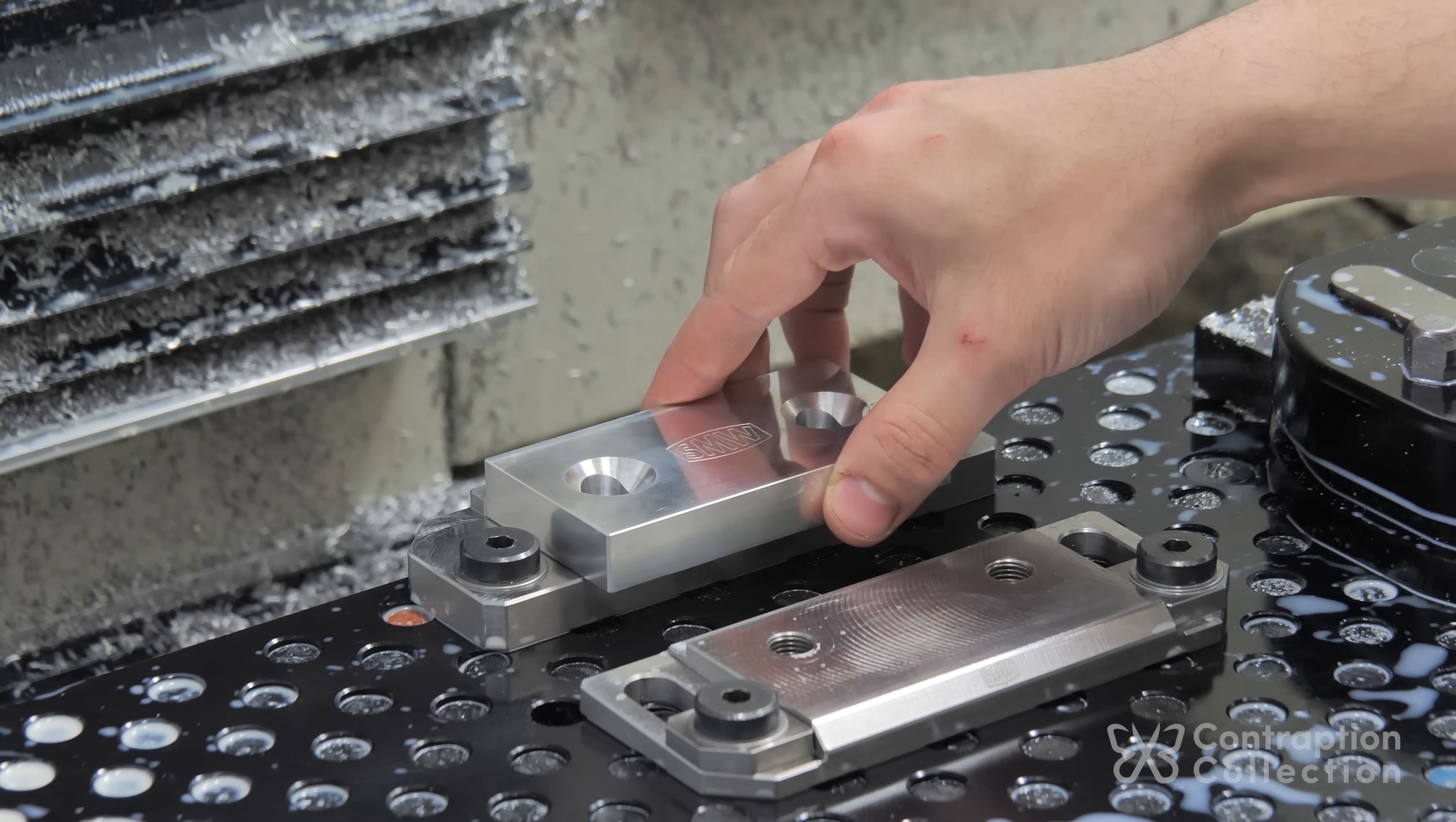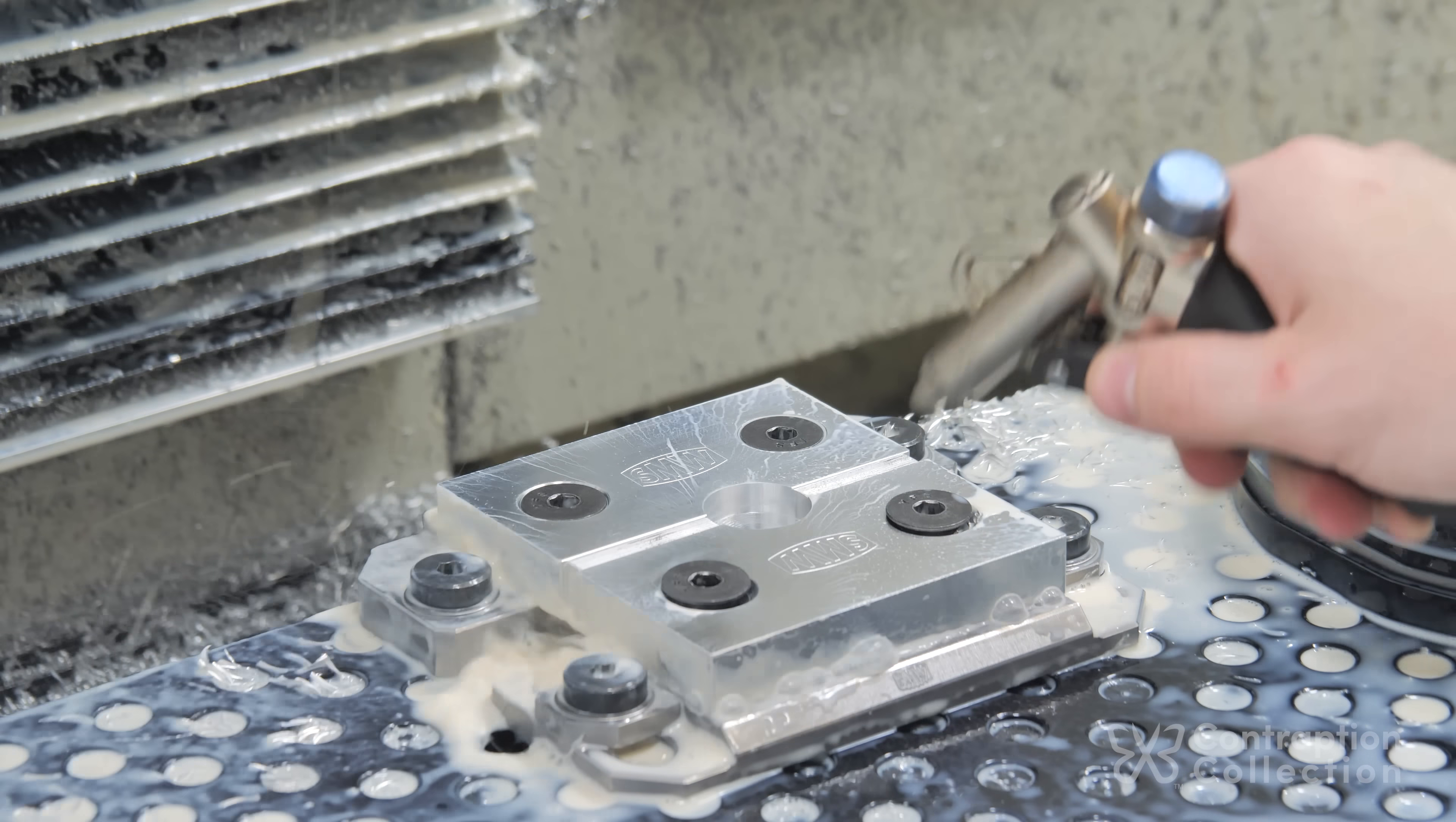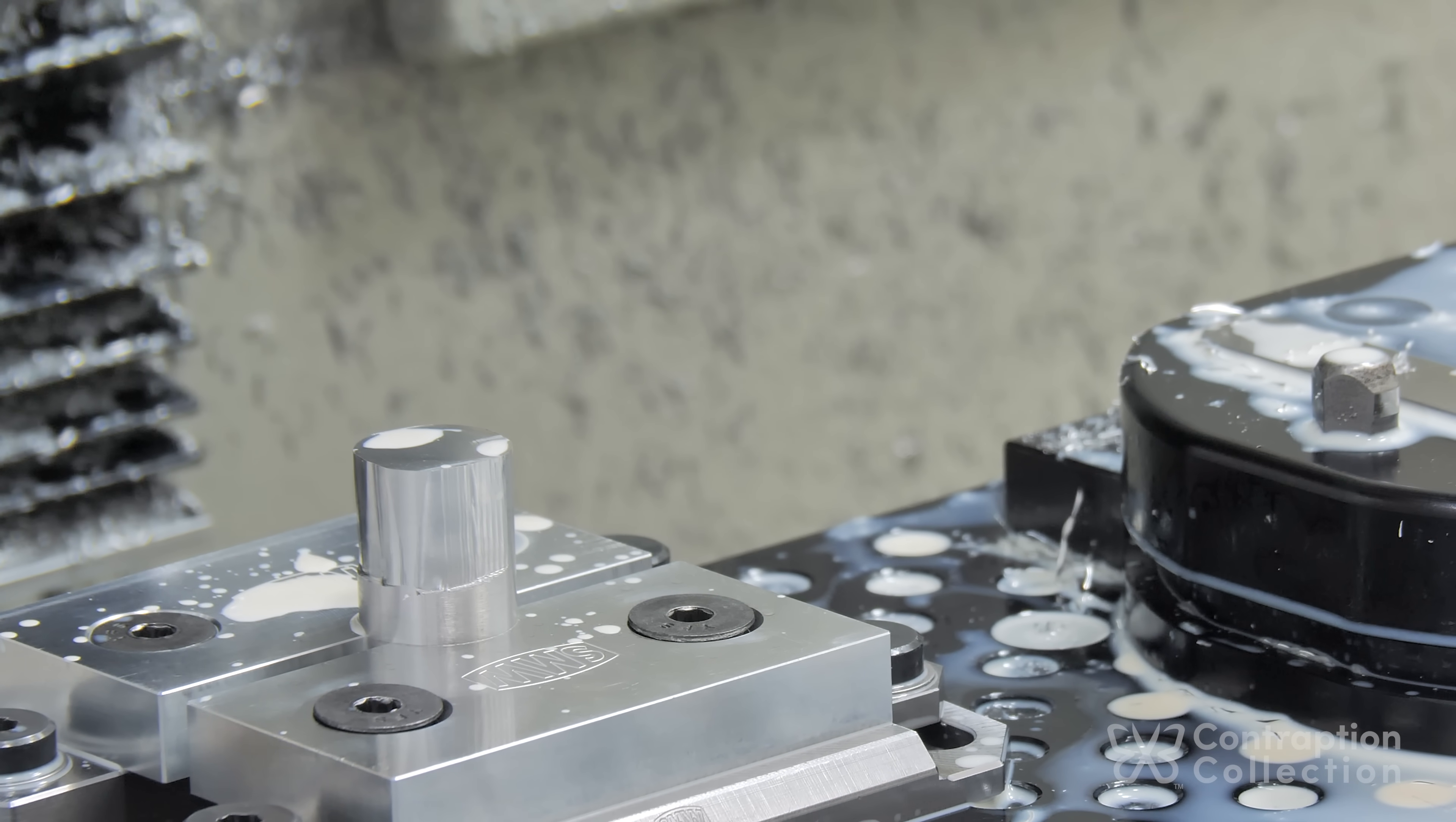So I made some soft jaws. I clamped in a piece of aluminum and then milled out a pocket. And adjusted it to fit. Maybe too much. So I adjusted the vise and tried again. I also bumped the camera. Sorry.